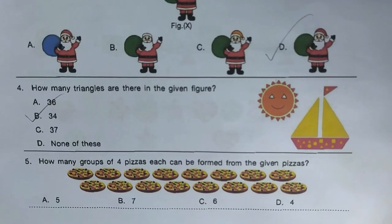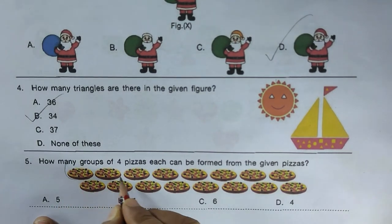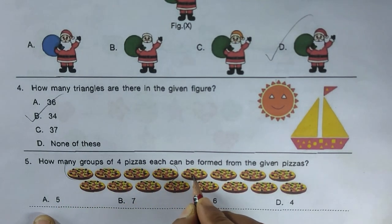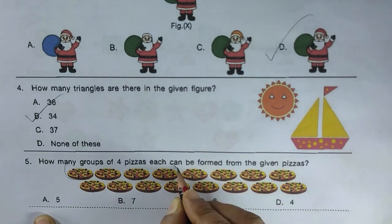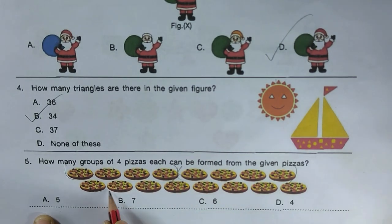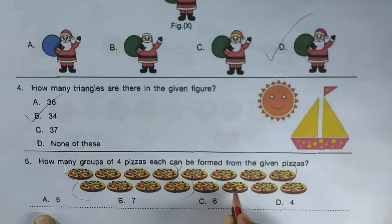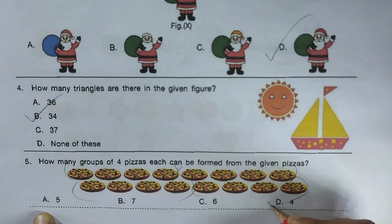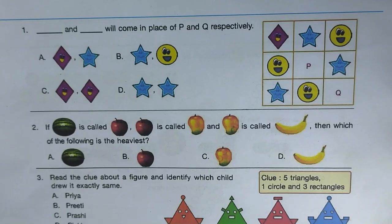Next question: how many groups of four pizzas can be formed? Grouping: first group of four, second group of four, third group of four, and fourth group of four — so there are four groups. Hence option D is the right answer.